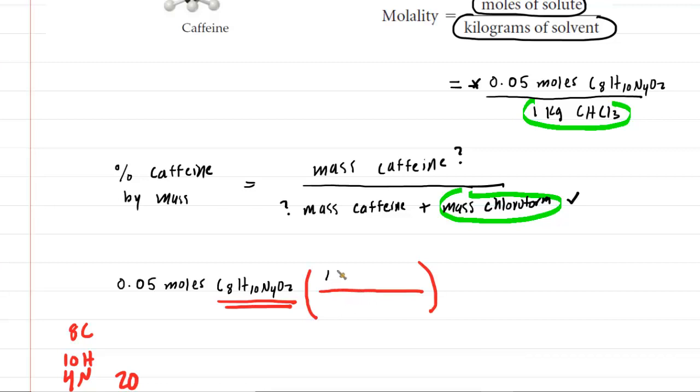The molar mass is approximately 194.2, and that is grams of caffeine. So you'd have to write the formula again for caffeine here. And that will be over 1 mole of caffeine.